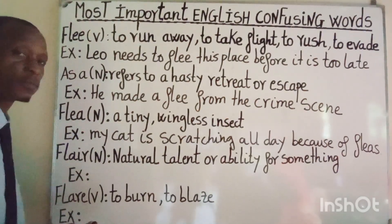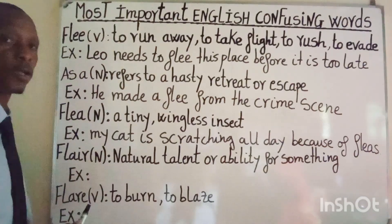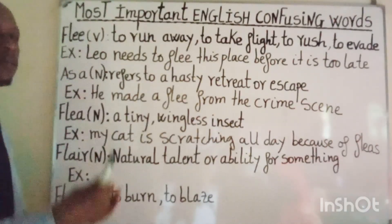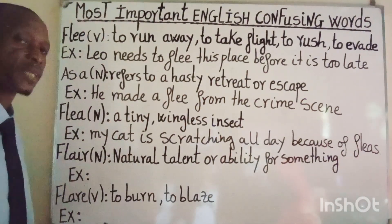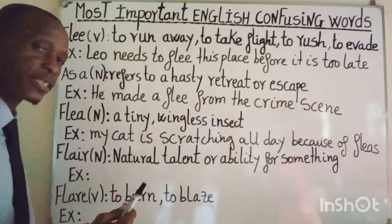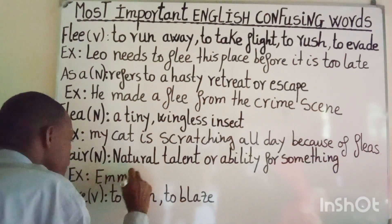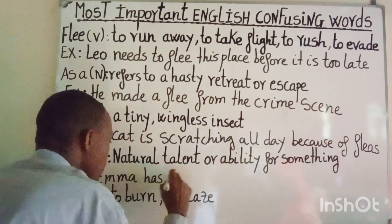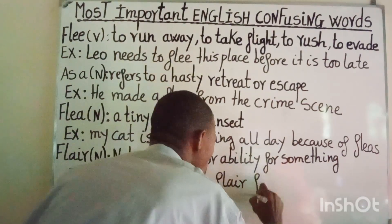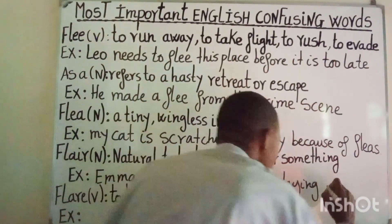Moving on to the remaining two words: 'flair' spelled F-L-A-I-R is always used as a noun, and it means a natural talent or ability for something. For example: Emma has a flair for playing guitar.